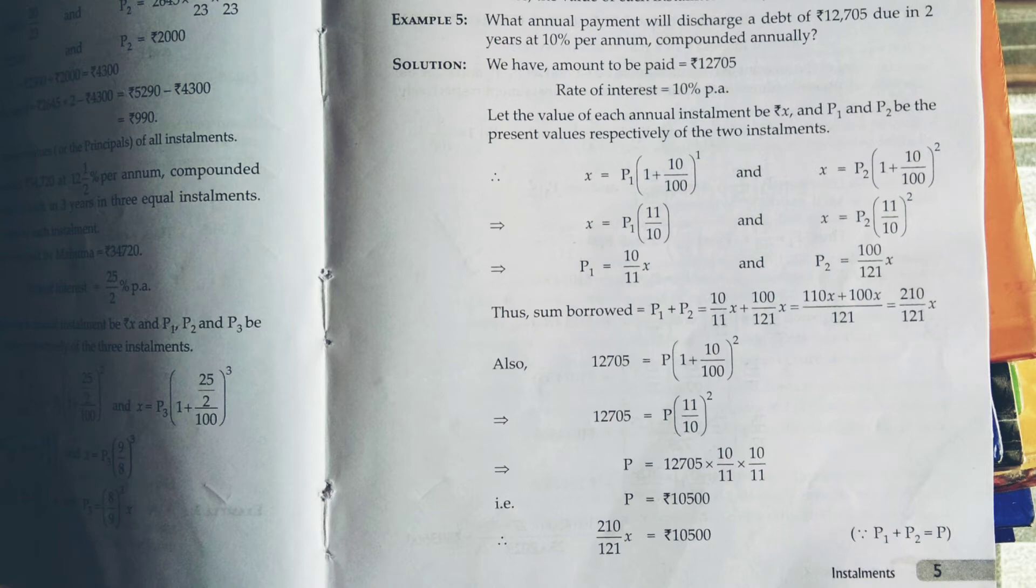Now, the first few steps are the same. Amount to be paid, the debt, is equal to rupees 12,705. The rate of interest compounded annually. Let the value of each installment be rupees x.